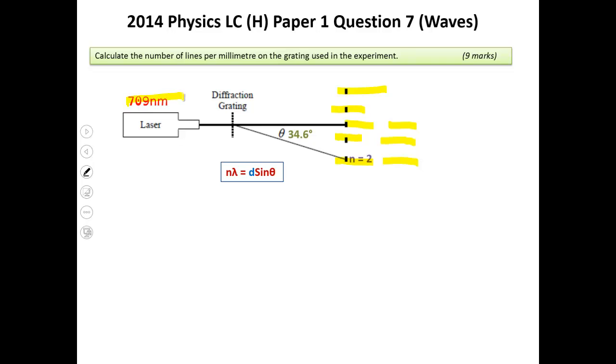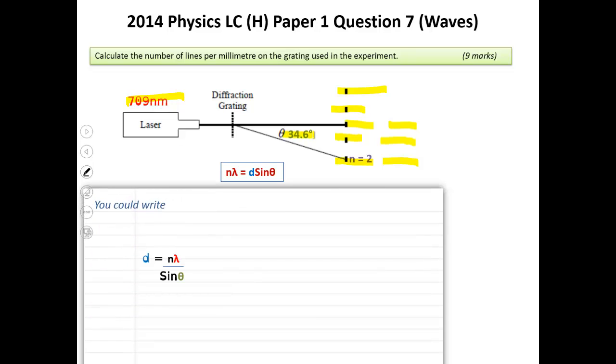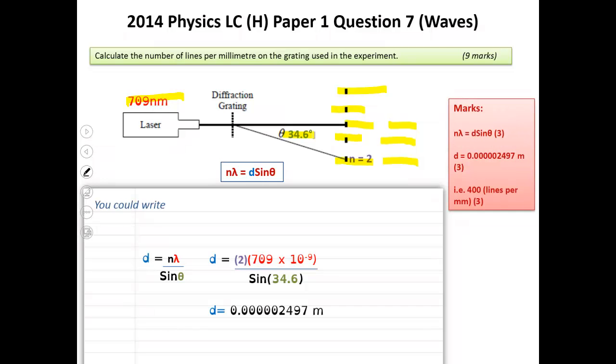Lambda is 709. d, we don't know. Sine theta. Well, we're using 34 for theta. So I just write down the formula. I rearrange it. I sub in the numbers, and I get d equals 0.27. Very small. But it should be because this is a gap in a diffraction grating and that's smaller than the width of a human hair. So it's pretty small. There's the marks.